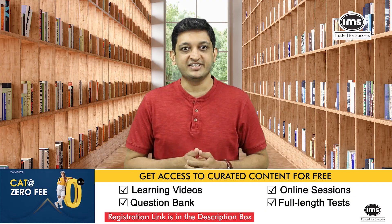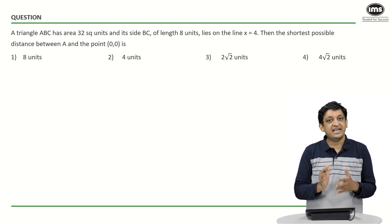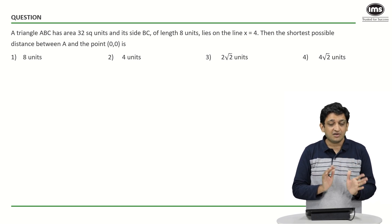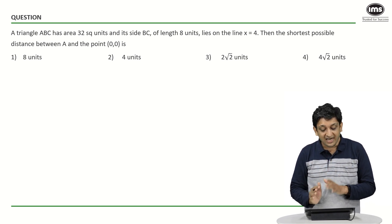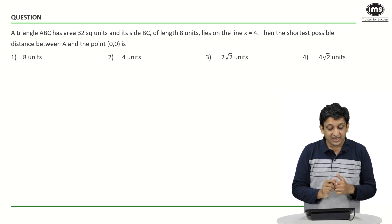In this question, you have a triangle ABC such that its area is 32 square units. We also know that one of the sides of this particular triangle, BC, has length 8 units and it lies along the line x equals 4.